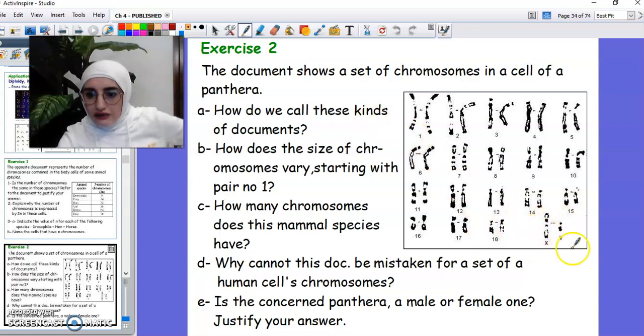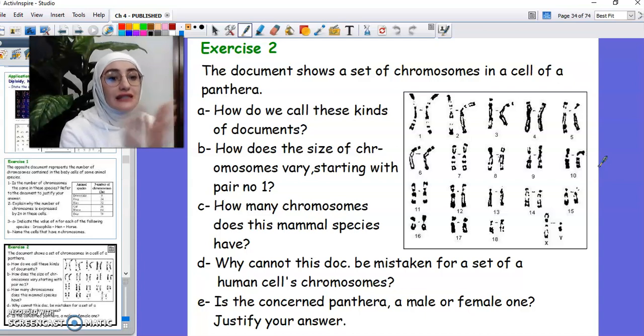How many chromosomes does this mammal species have? Let's see, so we have 18 autosomes and we have one gonosome, so we have 19 pairs, making it 19 times 2. I just said that I'm good in math. You do the math. So we can say it has 19 pairs, or if they want the number, multiply it by two. Why cannot this document be mistaken for a set of human cells' chromosomes? Because we already said that in a human cell we have 46 chromosomes, so this definitely couldn't be a human cell. Now we already talked about diseases. If we have a missing chromosome there will be a disease. If we have an extra chromosome, only one, also there will be a disease or a syndrome. So here we have a lot of chromosomes missing, so definitely it doesn't belong to a human.